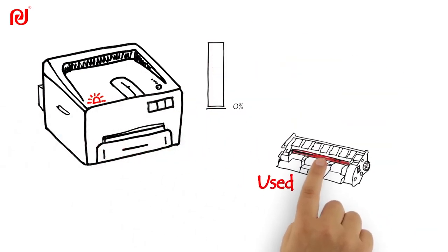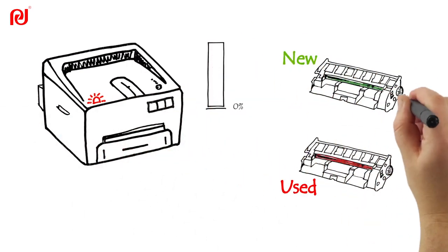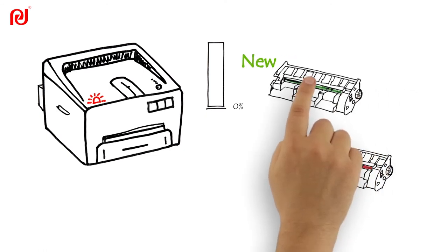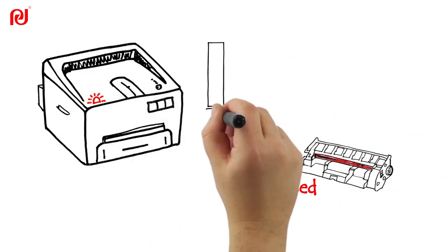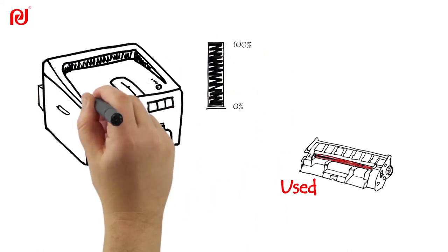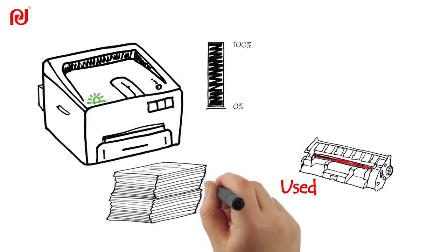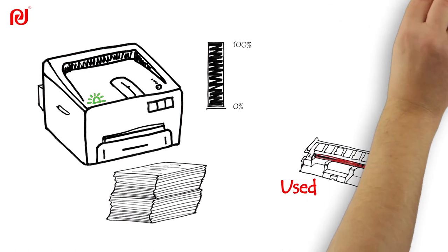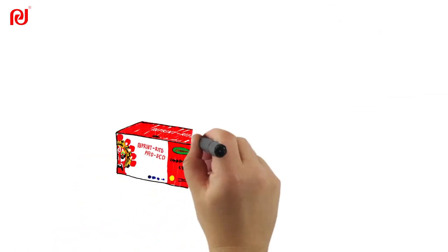After printer recertifies the new chip, the fuel volume of consumable is restored to 100%. Now the device can resume to print normally.